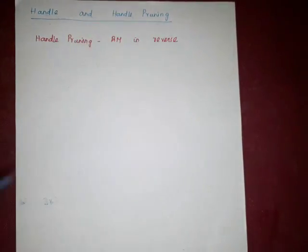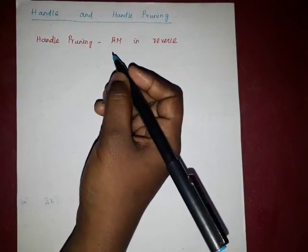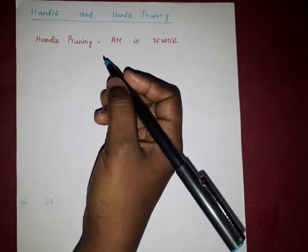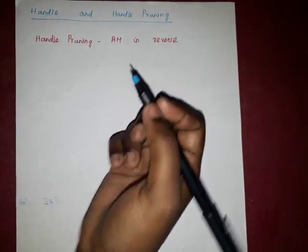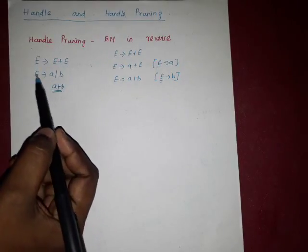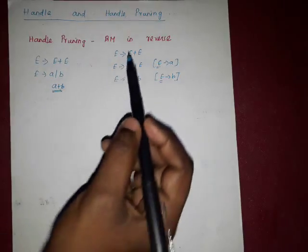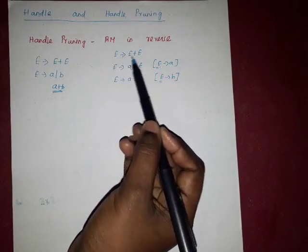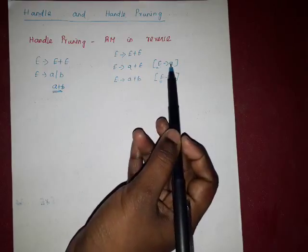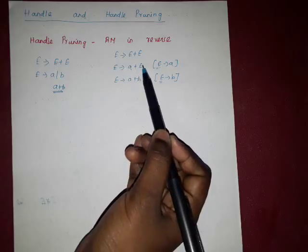Handle is a substring which can be reduced by the particular production. For example, in a derivation step, which symbol is going to be used or handled to reduce that symbol is said to be a handle. For example, this is the grammar: E tends to E plus E, and E tends to a or b. The input string we are going to evaluate is a plus b. So in the first step I am going to derive E tends to E plus E. First, small a is substituted for capital E, and in the second step small b is substituted for capital E.